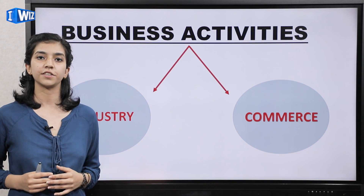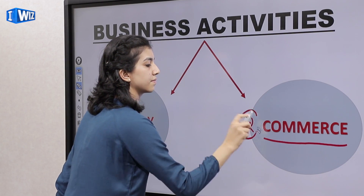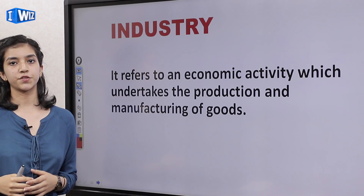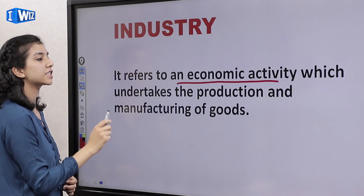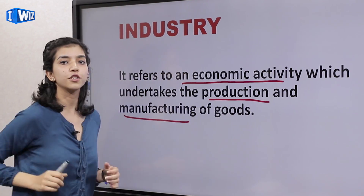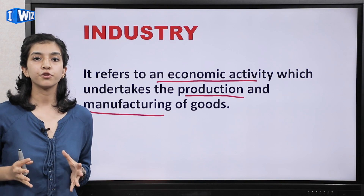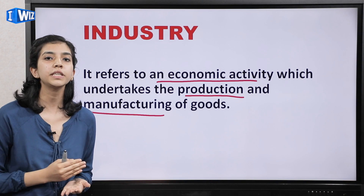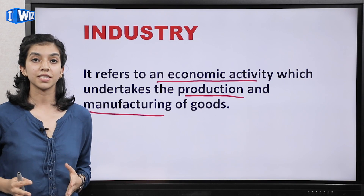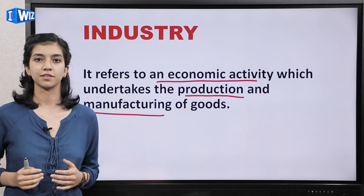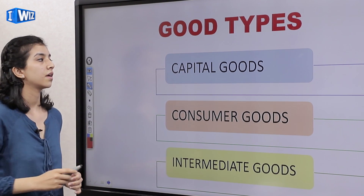Now we are with what are the types of business activities. The first one is industries and the second one is commerce. What is an industry? It refers to an economic activity which undertakes the production and manufacturing of goods and services. Every good and service needs to be produced at some place — raw material needs to be converted into an output so we the people can consume it. This is the job of the industry. Now industry produces a huge number of goods, so what are the types of goods?